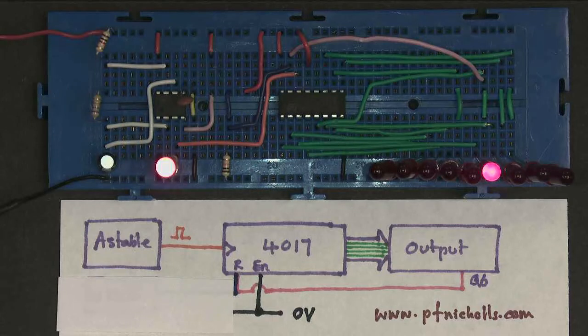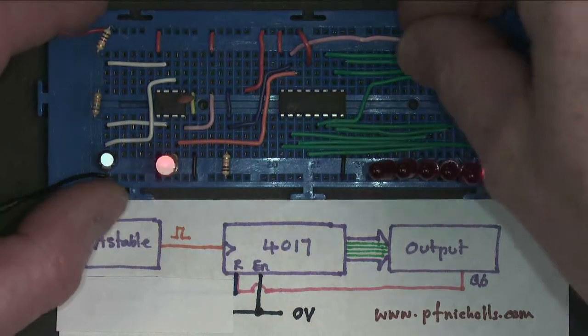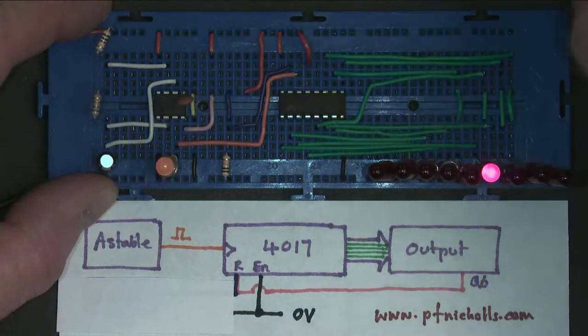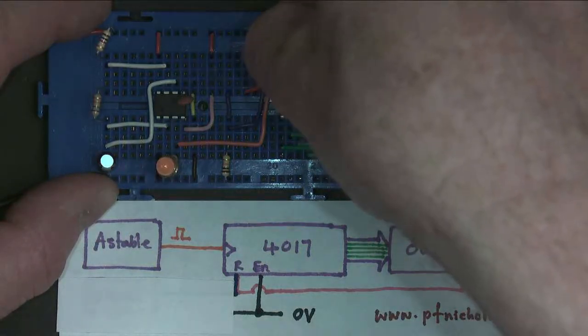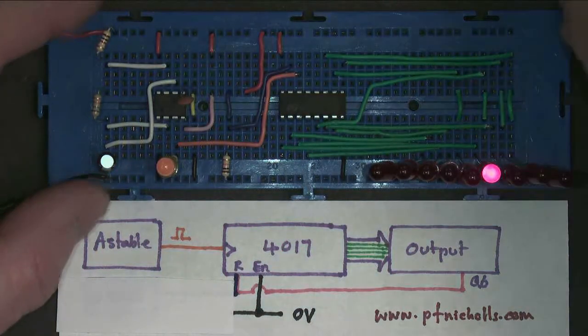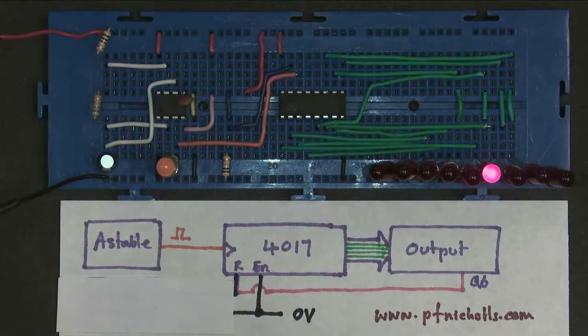Now this gives us a chance to do something different again. Let's just rebuild our circuit slightly. I'm going to take the reset out. I'm going to take the enable out.